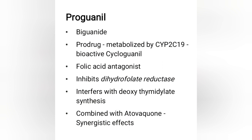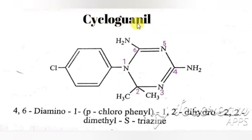Proguanil is a prodrug and a folic acid antagonist. It is metabolized by cytochrome P450 2C19 to its active metabolite cycloguanil, which inhibits dihydrofolate reductase (DHFR). By inhibiting DHFR, it interferes with deoxythymidylate synthesis. Proguanil is usually combined with atovaquone.